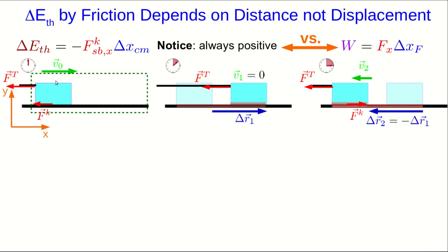Here we have a block. It's initially sliding to the right. There is a tension due to some string and a kinetic friction acting on it.